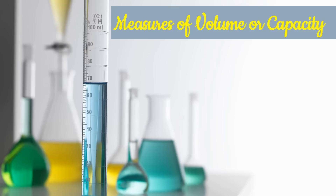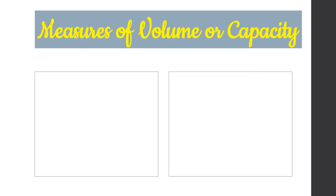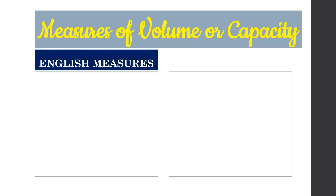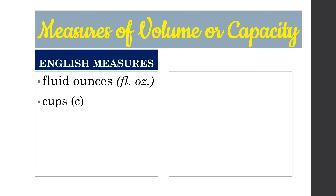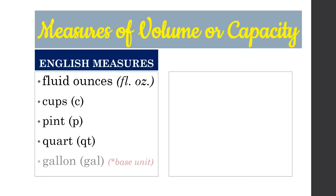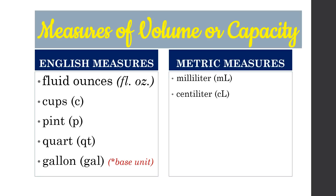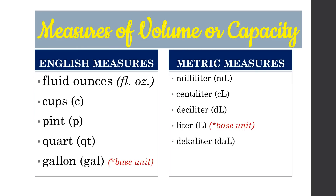The next topic is volume or capacity. For English measures, the common units are fluid ounces, cups, pint, quart, and gallon, which is the base unit. For metric measures, we have milliliter, centiliter, deciliter, liter (the base unit), decaliter, hectoliter, and kiloliter. Again, we are just adding the base unit liter to the prefixes.